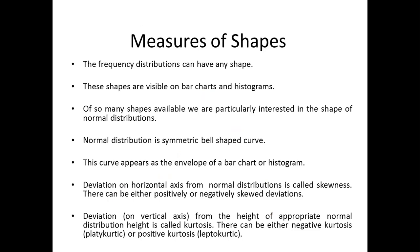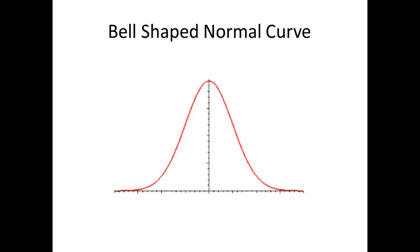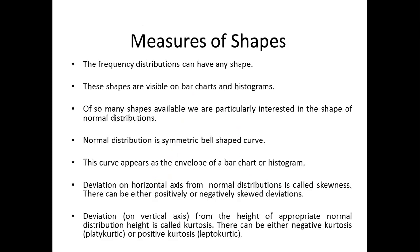The normal distribution is a symmetric bell-shaped curve that appears as the envelope of a bar chart or histogram. If we connect the bars of a histogram with a freehand curve, that curve would appear to be normally distributed. There can be deviations from this normal distribution shape: deviations on the horizontal axis are called skewness, which can be positive or negative; and deviations on the vertical axis in terms of height are called kurtosis, which can be negative (platycurtic) or positive (leptocurtic).